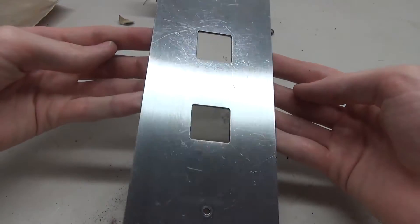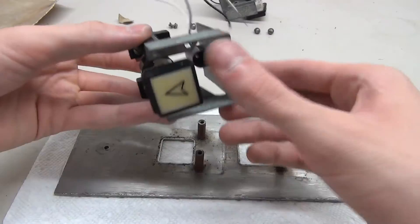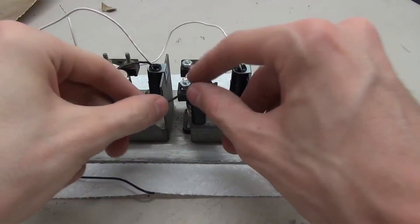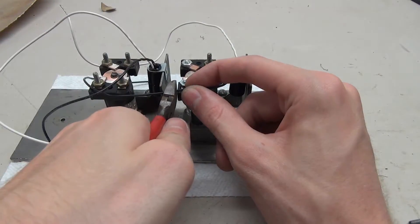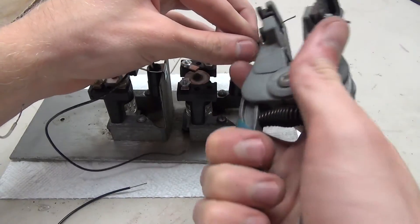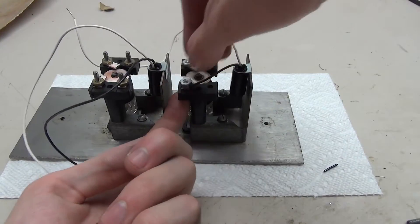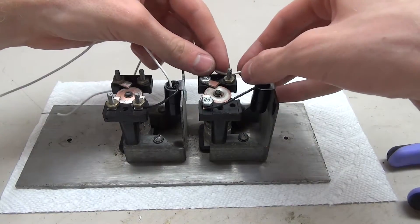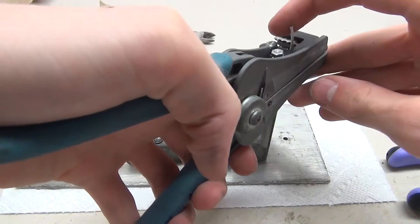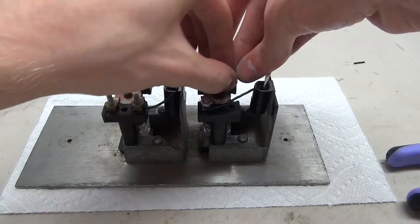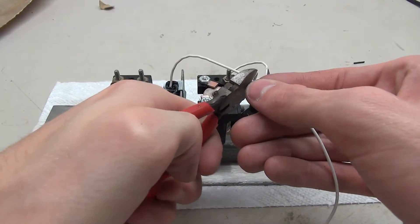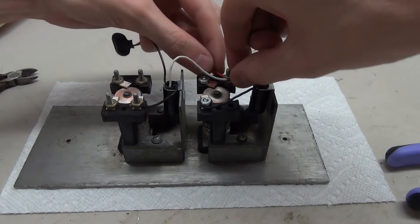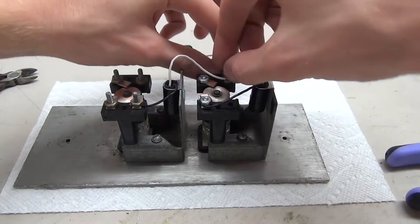You can see here the plate is nice and shiny and finished. Next, I'm going to put the buttons back onto the panel and get started with wiring.